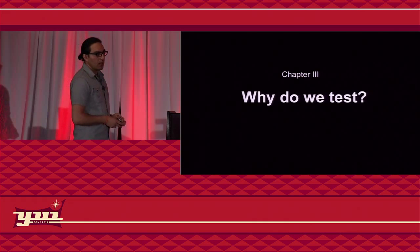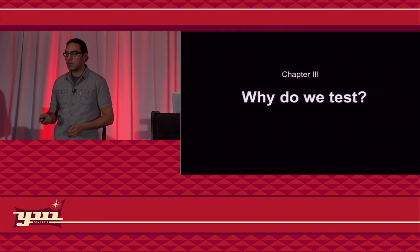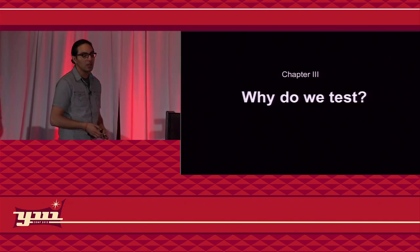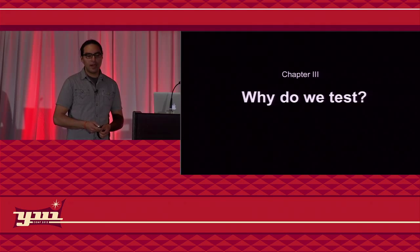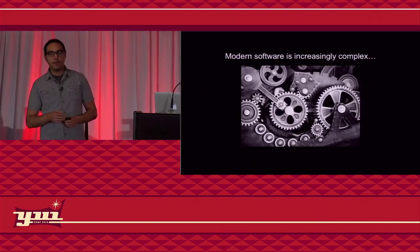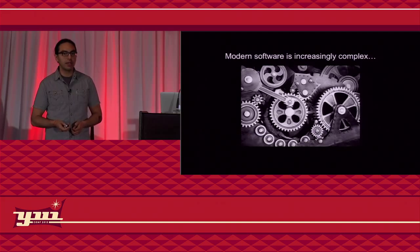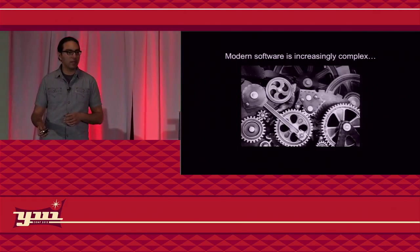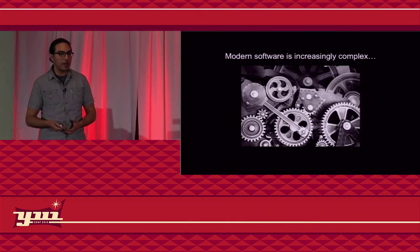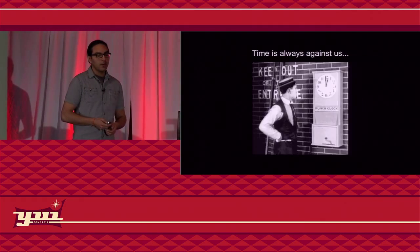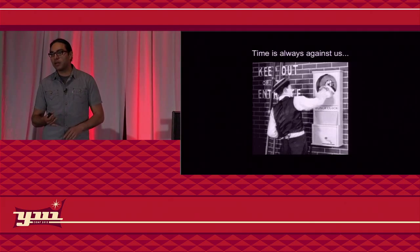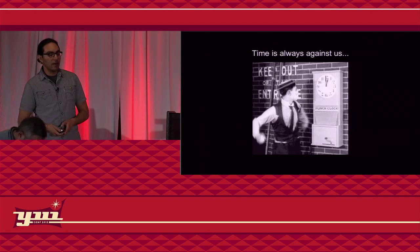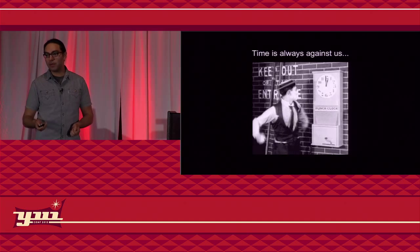We need to go back to the source. If we are trying to get tests into our development process, we need to understand why we do this testing. I think there are two main reasons. First, modern applications are increasingly complex — we have distributed services, cloud services, content delivery networks, multiple devices, multiple browser versions. Time is always against us; we are always trying to release sooner and faster. So we test because we want to get this complexity delivered on time with quality.